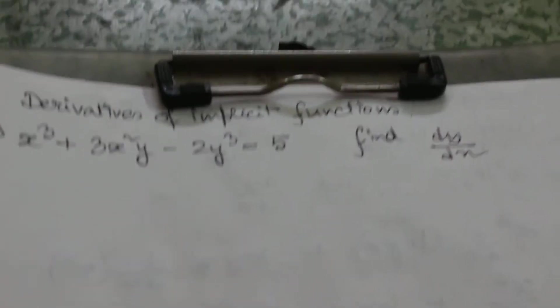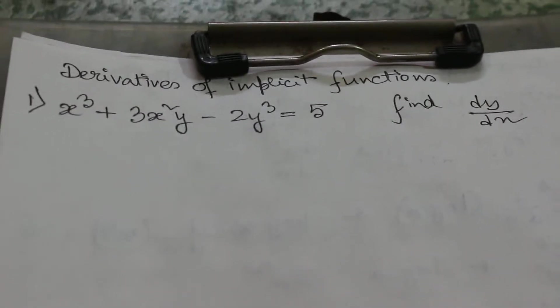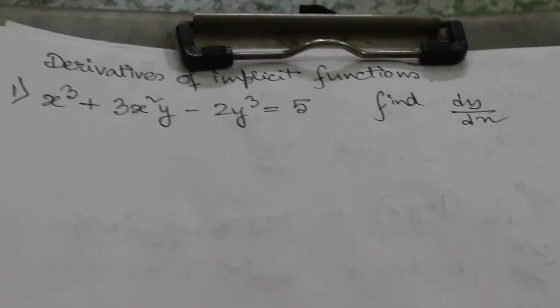That means there will be an equation where both x and y will be there. We have to take the dy/dx from that equation.